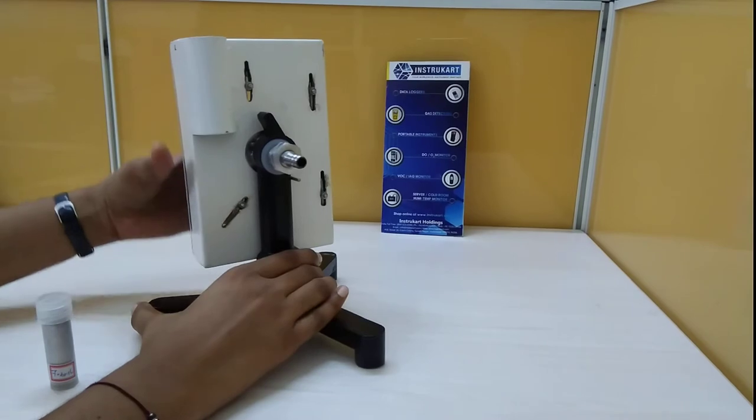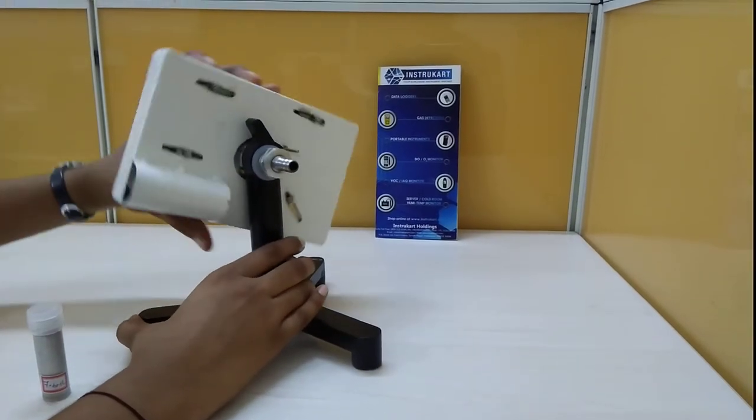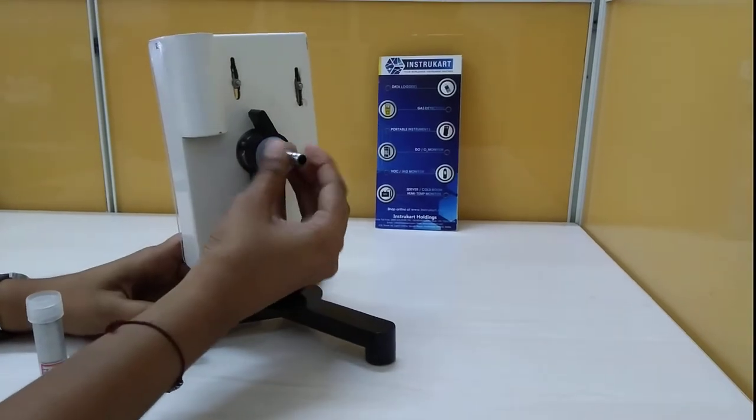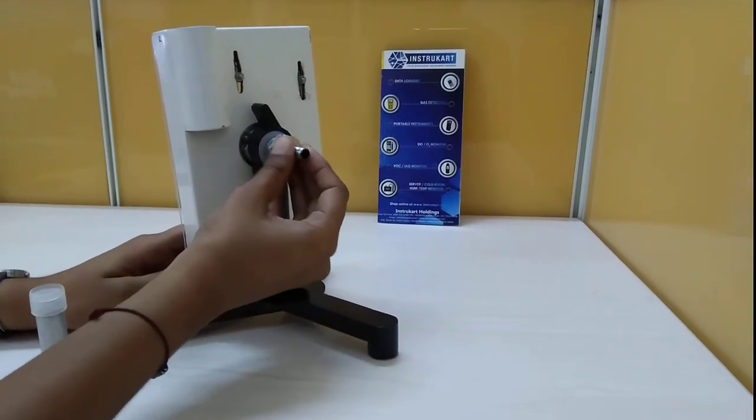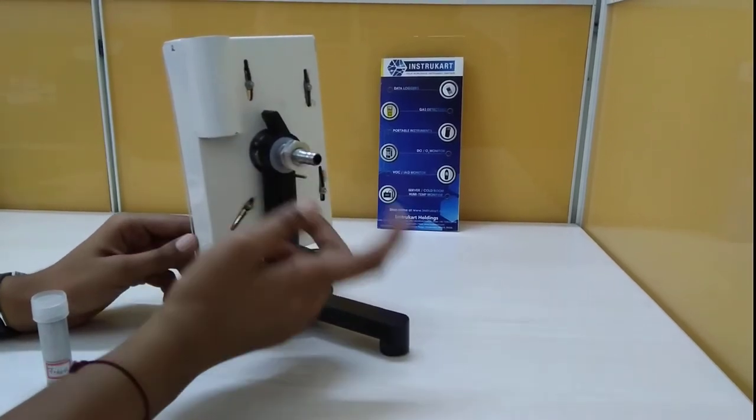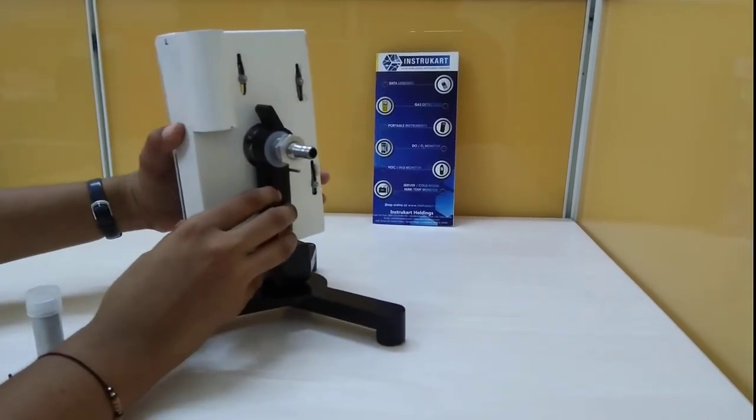This McLeod gauge comes with an arm which can be tilted up to 90 degrees and is provided with a hose nipple. This hose nipple is used to connect the measuring point to the McLeod gauge to measure vacuum.